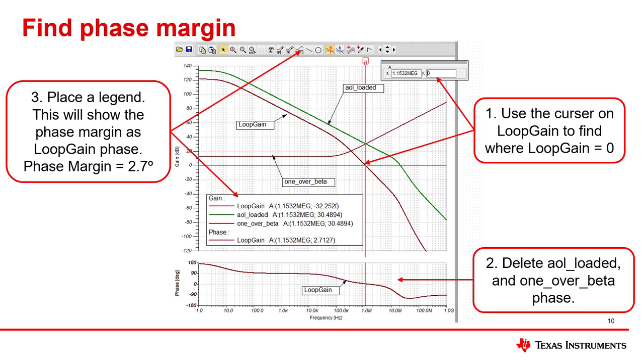The final step is to press the legend button. The legend will give the detail of gain and phase at the cursor's current position. Thus, the phase shown on the legend gives the phase margin. In this example, the phase margin is 2.7 degrees. Since this is less than 45 degrees, this amplifier configuration has significant stability concerns.